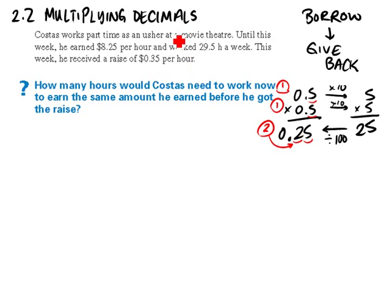So let's look at a more complicated question. Costas works part-time as an usher. Until this week he earned $8.25 an hour and worked 29.5 hours a week. Let's forget the second part about receiving a raise and let's just calculate how much he earns now.